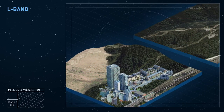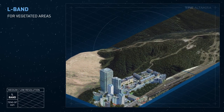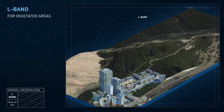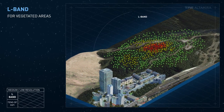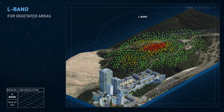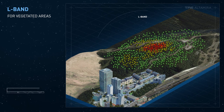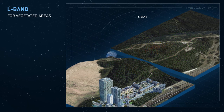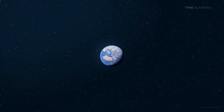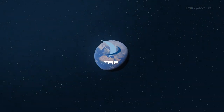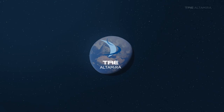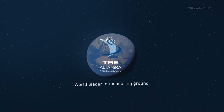For highly vegetated areas, the long wavelength of L-band satellites is recommended to obtain the highest point density. TRE Altamira provides state-of-the-art solutions for measuring ground and structural movements from space.